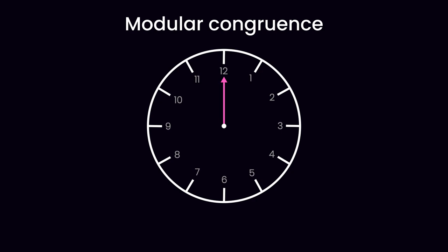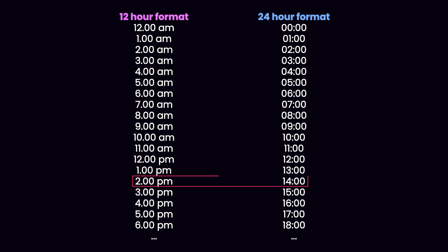If we have a number larger than 12, like 14, we can still place it on the clock. In this case, 14 is 12, one full rotation on the clock, plus 2, so we land on 2. Mathematically, we can say that 14 and 2 are congruent modulo 12. For those using the 24 hour time format, this relationship should be familiar, as in this system, 14 o'clock is 2 pm.